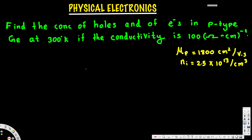Let's look at this problem. The question asks us to find the concentration of holes and electrons in p-type germanium at 300 degrees Kelvin, given that the conductivity is 100 ohm·centimeter⁻¹. In a p-type semiconductor, the majority carriers are holes and the minority carriers are electrons.